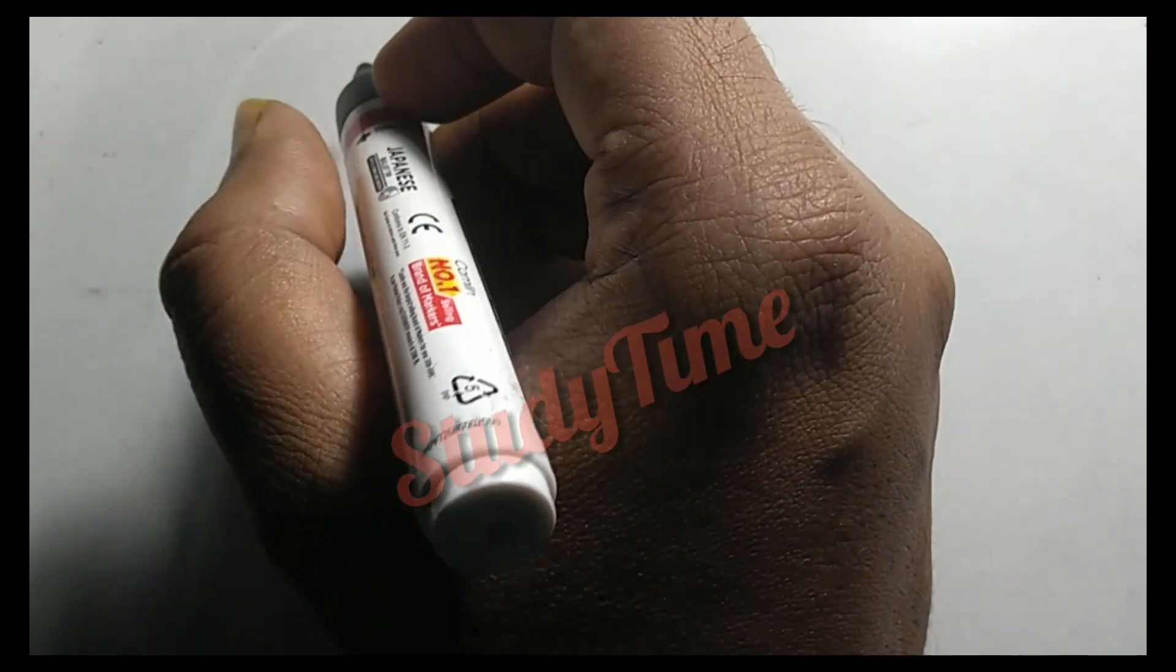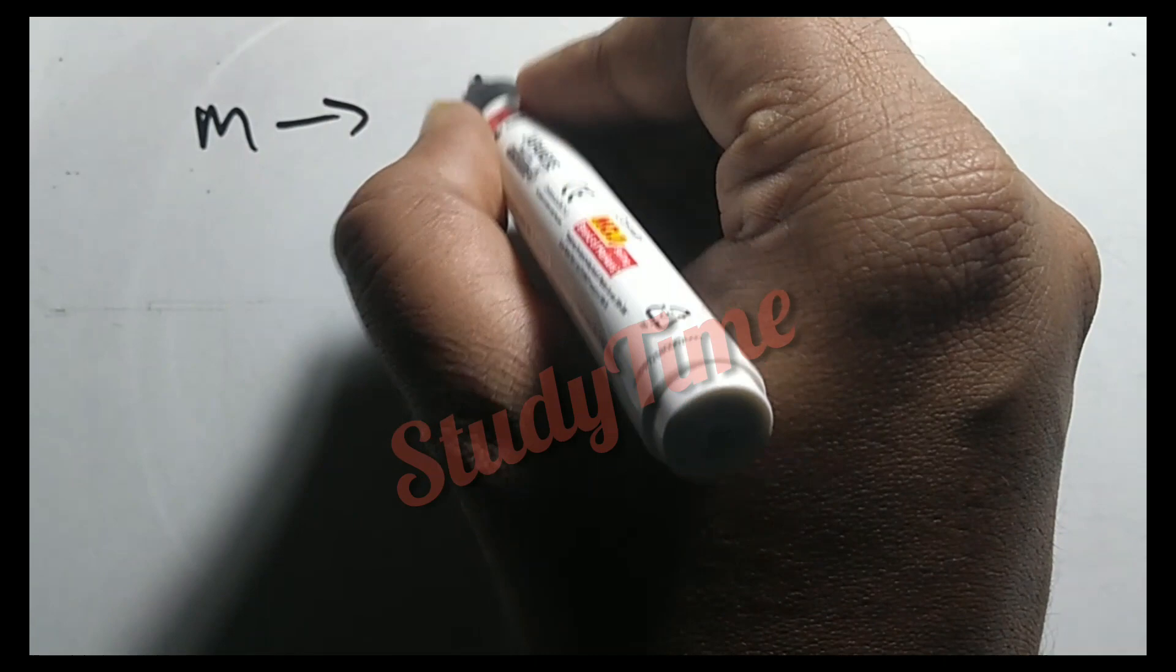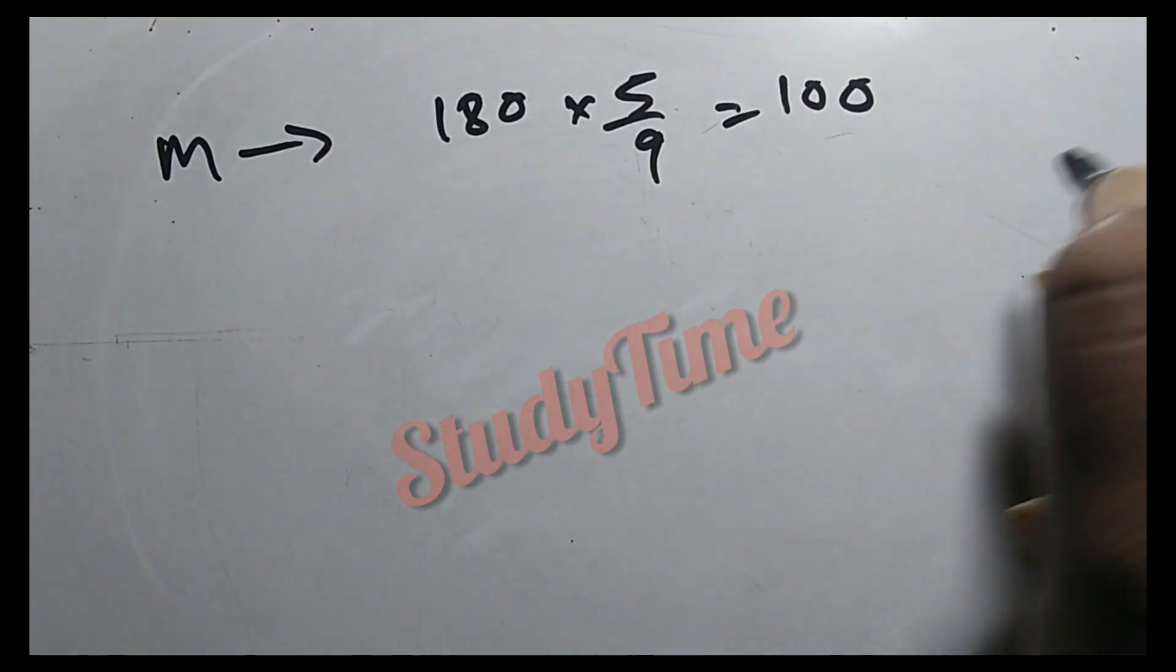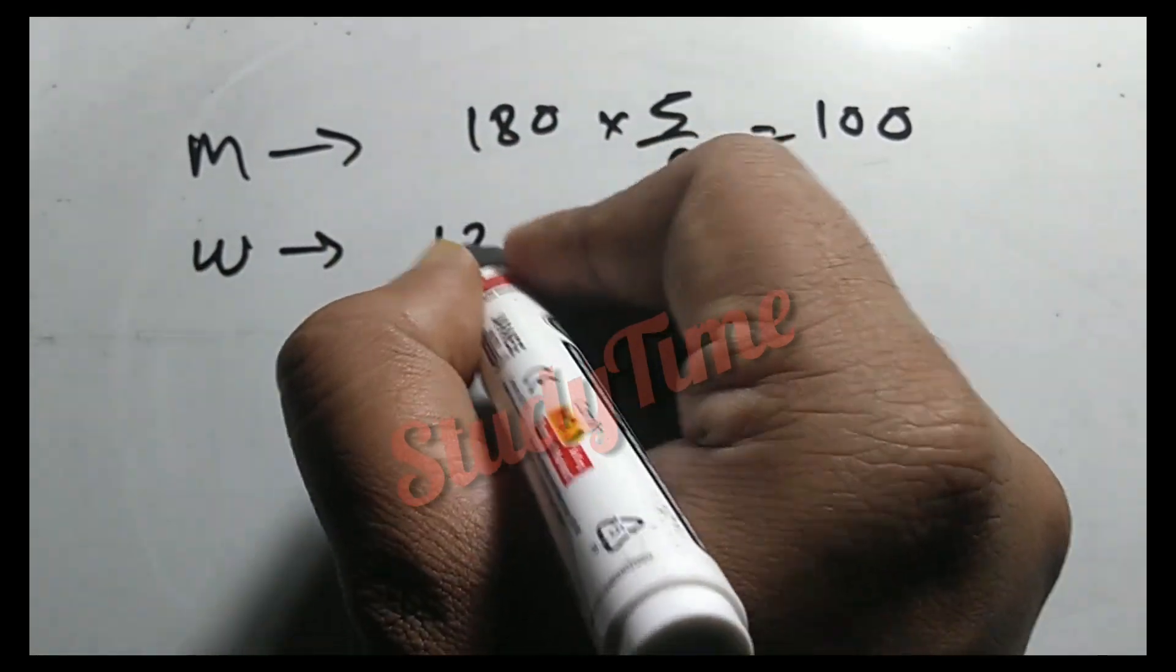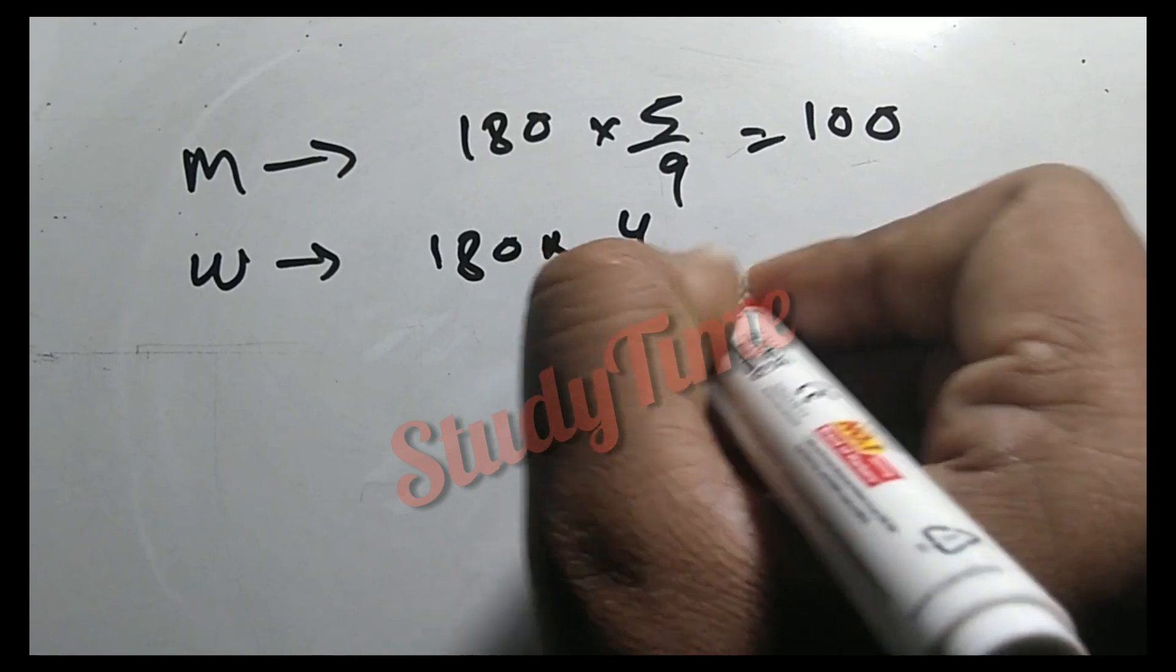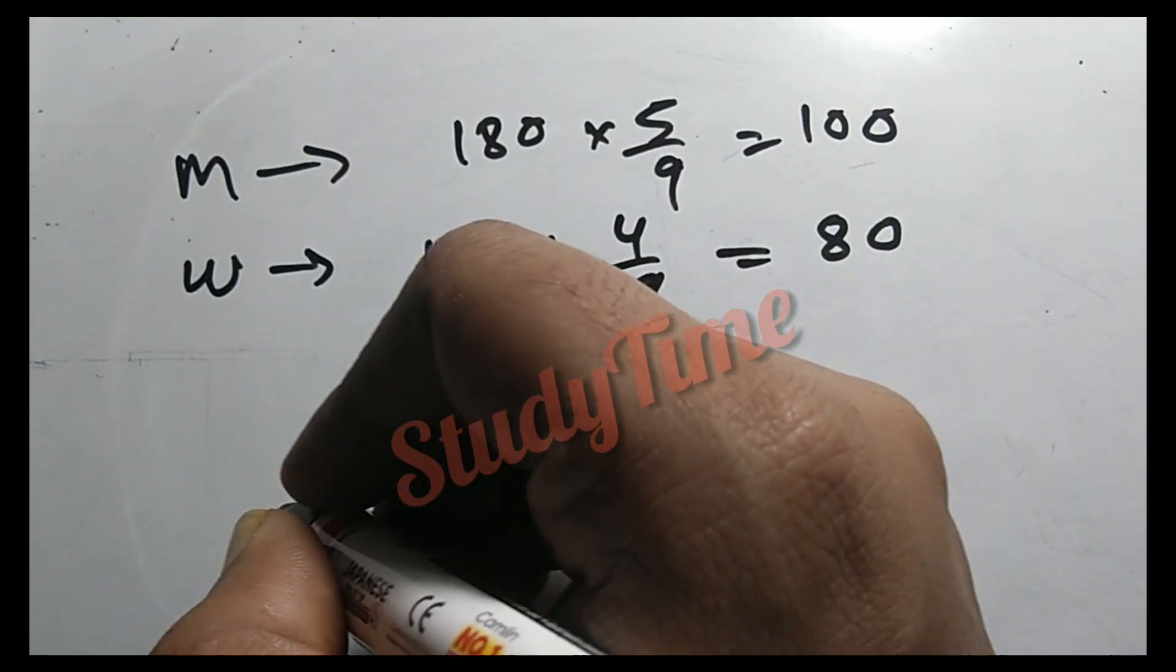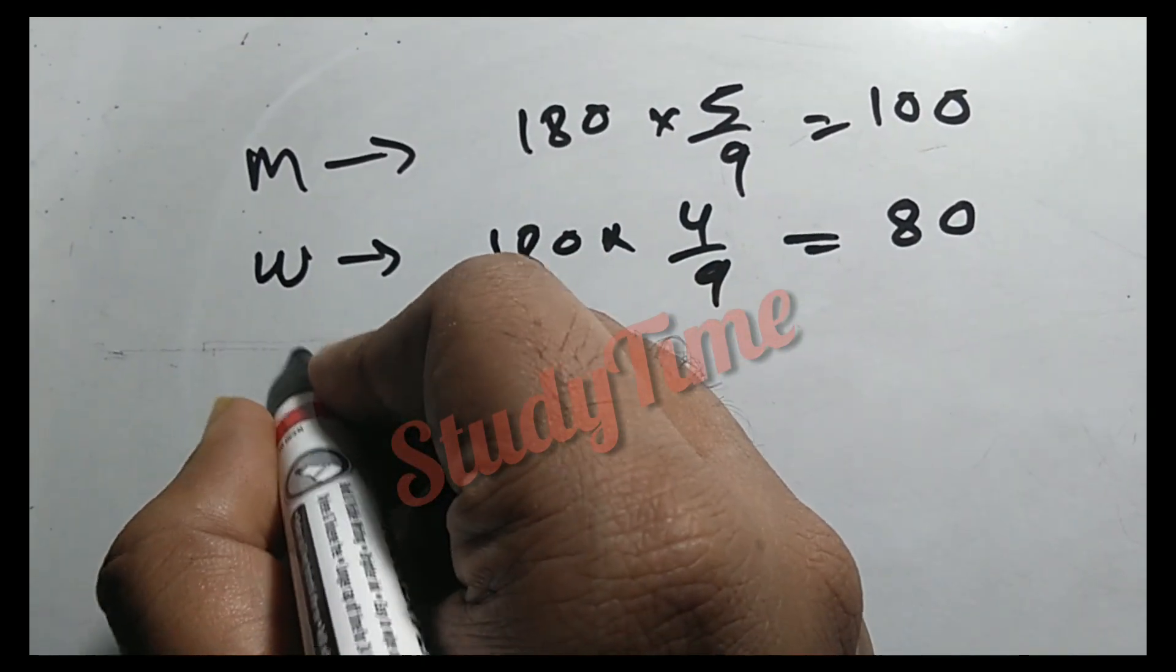We need to find the number of men. The total is 66 people. The number of men plus the number of women equals 66.